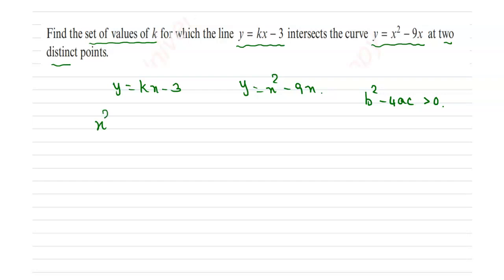Now equate these two. So we will get x squared minus 9x equals kx minus 3, and from this we can have x squared minus 9x minus kx plus 3 equals 0, which implies x squared minus (k plus 9) multiplied by x plus 3 equals 0.